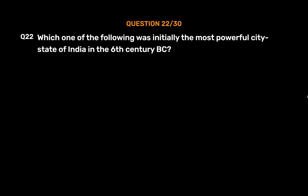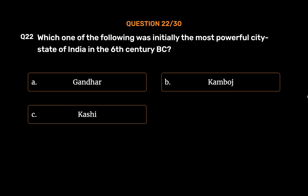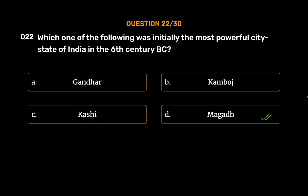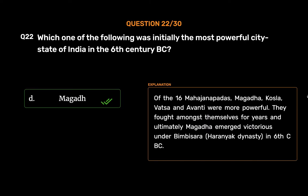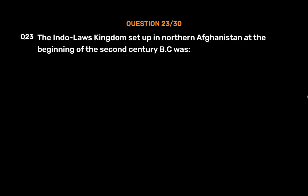Question number twenty-two: Which one of the following was initially the most powerful city-state of India in the sixth century BC? Option A: Gandhar, Option B: Kamboja, Option C: Kashi, Option D: Magadha. The correct answer is Option D, Magadha. Of the 16 Mahajanapadas, Magadha, Kosala, Vatsa, and Avanti were the more powerful ones. They fought amongst themselves for years, and ultimately Magadha emerged victorious under Bimbisara of the Haryanka dynasty in the sixth century BC.